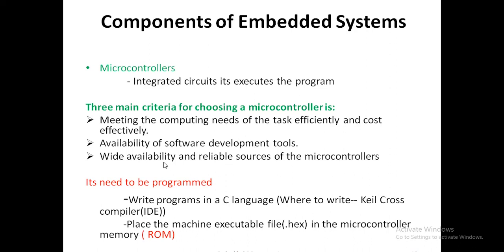The third criterion is the availability of reliable reference sources for the microcontroller. Suppose you are choosing a microcontroller — check whether datasheets are available. From the datasheet only, we can know the supply voltage, how many pins are there, what is the clock frequency, how many digital and analog pins are there, and how many bus protocols are available. Check these things on the internet or other sources before choosing the right microcontroller.